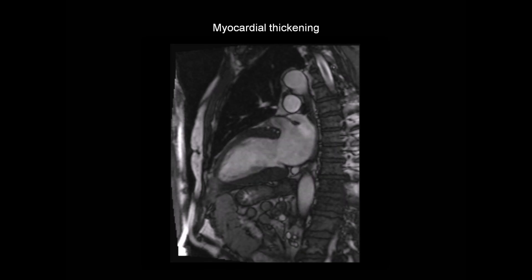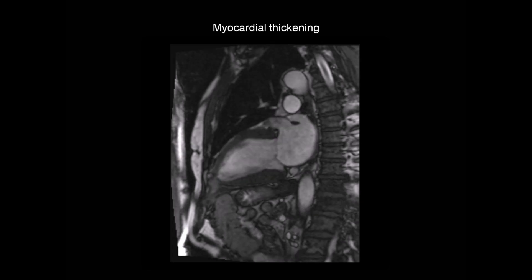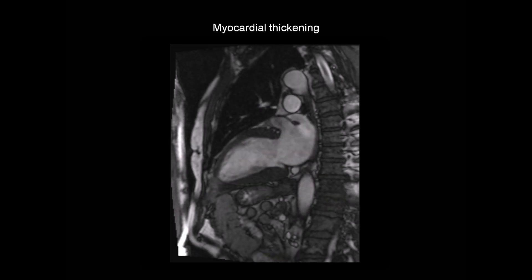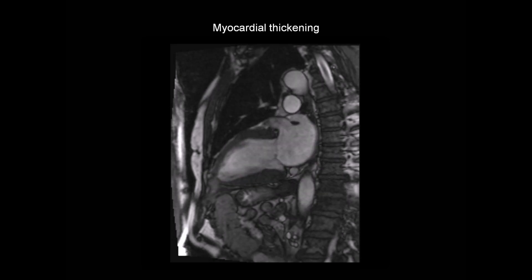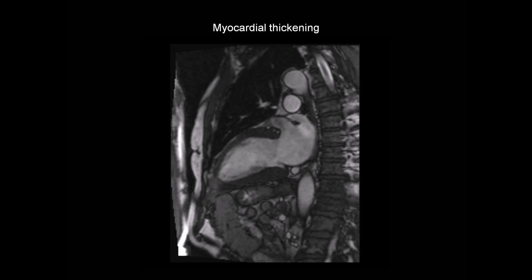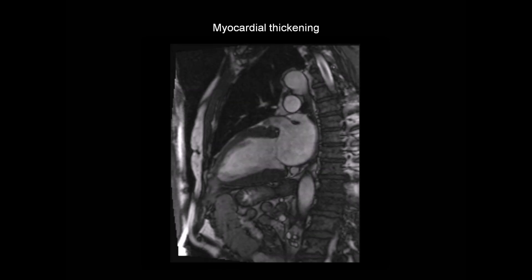Strictly speaking, it's not technically correct to call this hypertrophy, because there's no increase in the size or number of myocytes. Instead, the myocardium is thickened as a result of the deposition of amyloid protein. The patient also has moderately impaired systolic function with an ejection fraction of 38%.